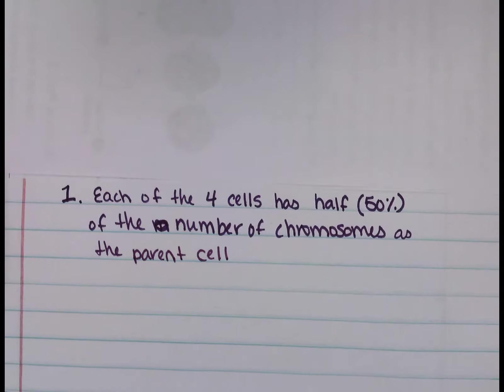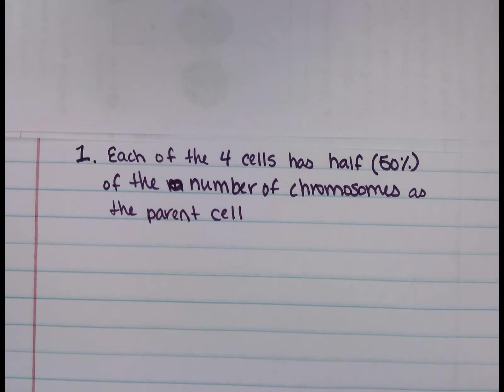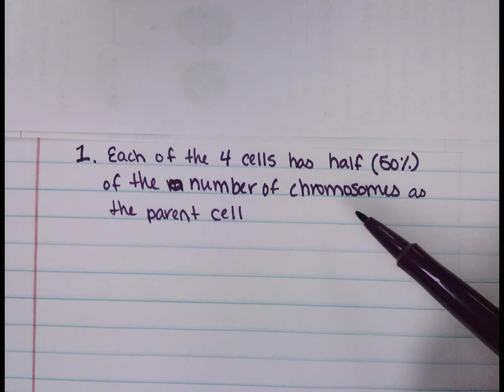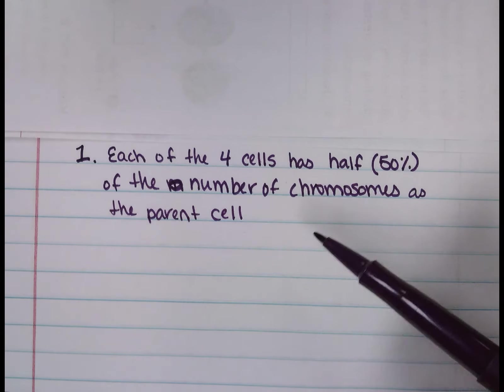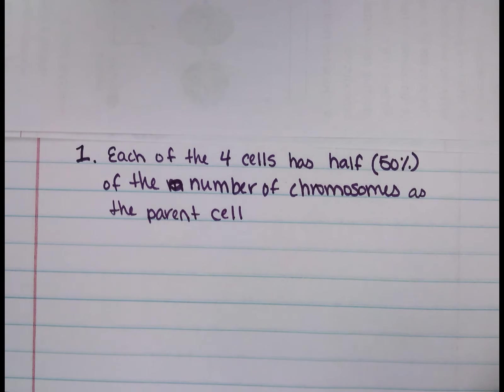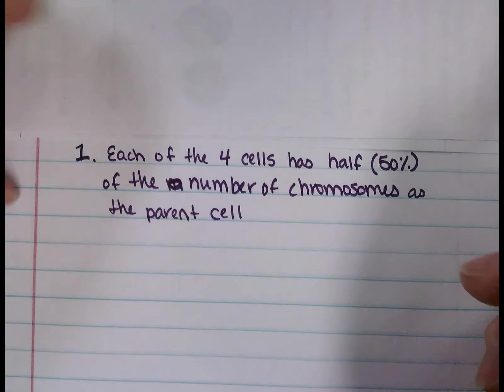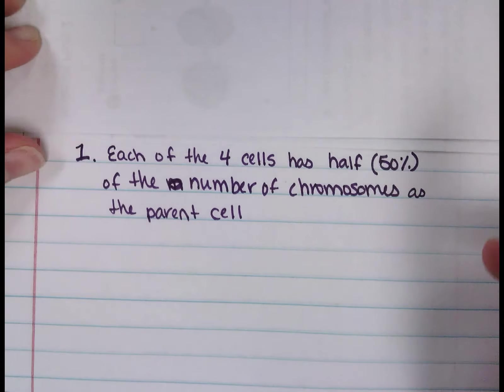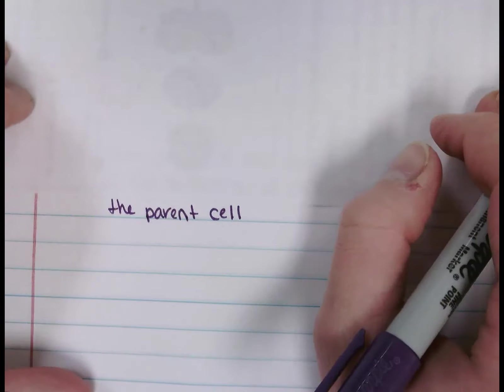So the parent cells have 46, a full set of chromosomes, while the daughter cells, or however you want to say it, that are produced, the four cells, are going to have half or 50% of the number of chromosomes as the parent cell. So we're going to skip. Looking back, we did Roman numeral one, we've done A, we've done one. So I'm going to scoot this down a little bit more and we're going to do Roman numeral two.